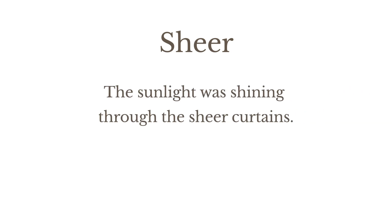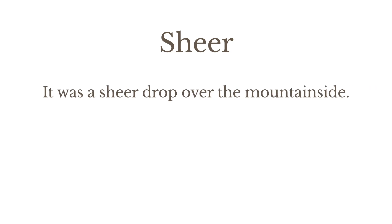First of all, 'sheer' is used to describe material that's thin and delicate. For example, 'the sun was shining through the sheer curtains' — in other words, the curtains were diaphanous. You might also use it of something that's extremely steep, almost vertical. For example, 'it was a sheer drop over the mountainside.'